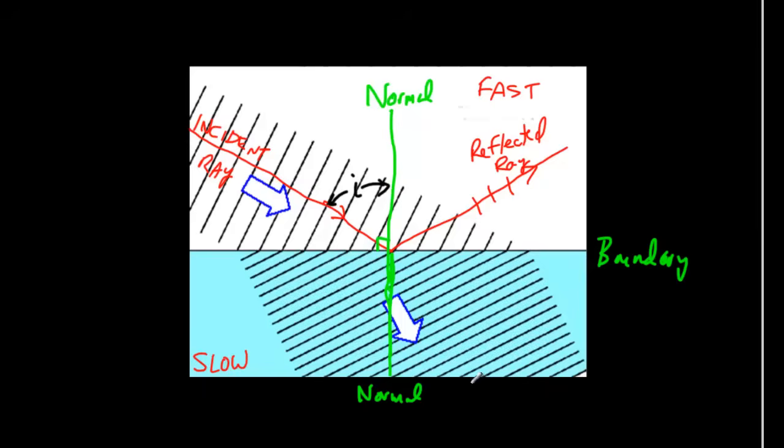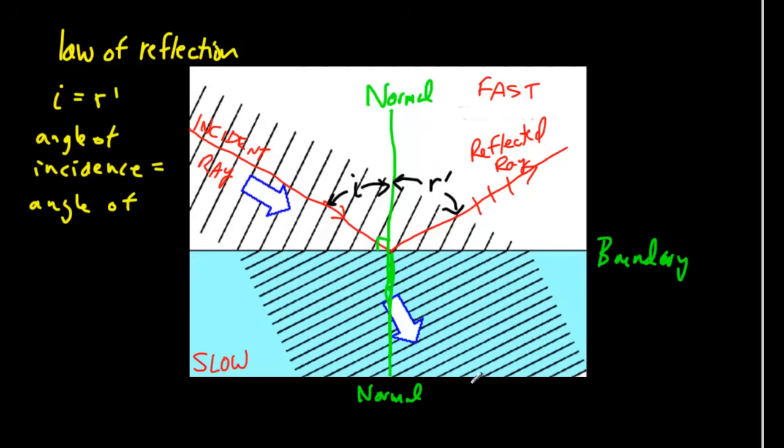On the other side, I'll call this r prime. That will be the angle of reflection. So that I can write, this is actually the law of reflection. Let me write it over here. The law of reflection. It simply says that whatever that angle eye is, it's going to be exactly the same as the angle r primed. In other words, the angle of incidence must equal the angle of reflection.